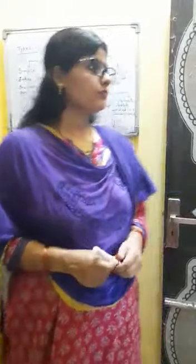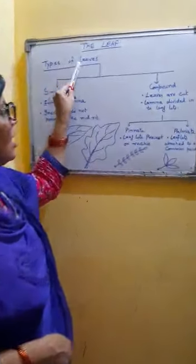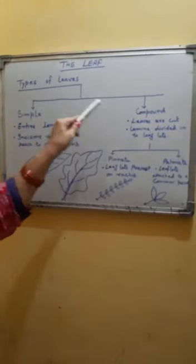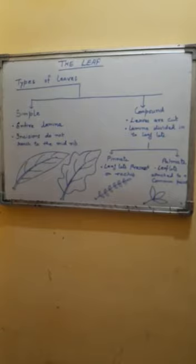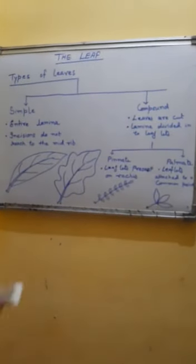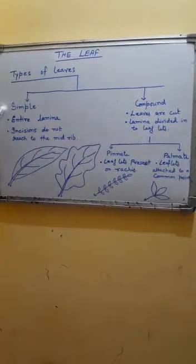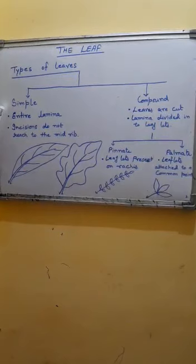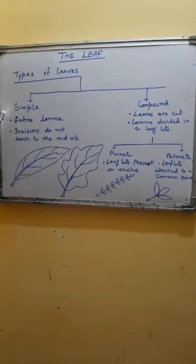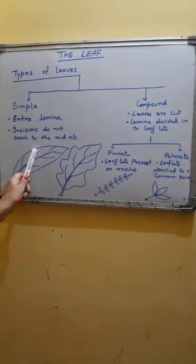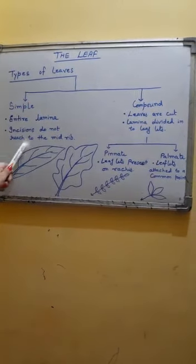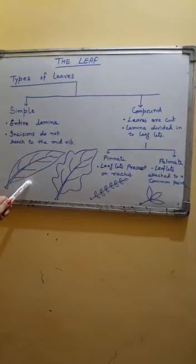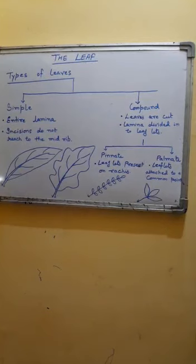Now we will discuss the types of leaves. Leaves are basically of two types depending upon their leaf blade or lamina. The first type of leaf is called simple leaf. A simple leaf is a leaf in which the lamina is entire — you can see the lamina is entire without any cut. So the lamina is smooth and entire without any incisions or cut.